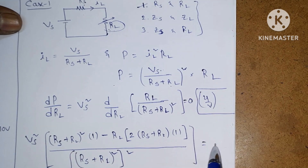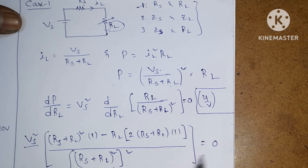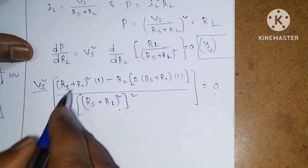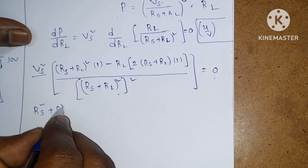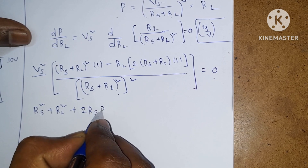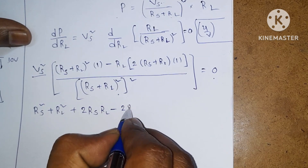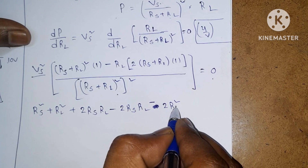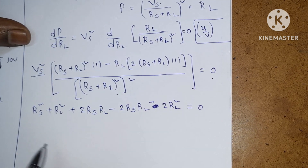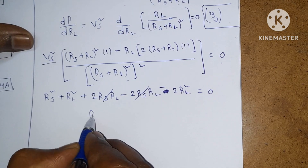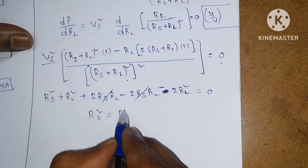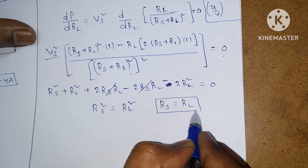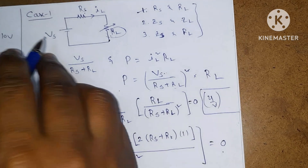Equating to zero and simplifying, we expand (Rs + Rl)² as Rs² + Rl² + 2Rs·Rl, then subtract 2Rl² to get Rs² + Rl² + 2Rs·Rl − 2Rs·Rl − 2Rl² = 0, which gives Rs² = Rl². Therefore the condition for maximum power transfer is Rs = Rl, meaning maximum power is transferred from source to load.